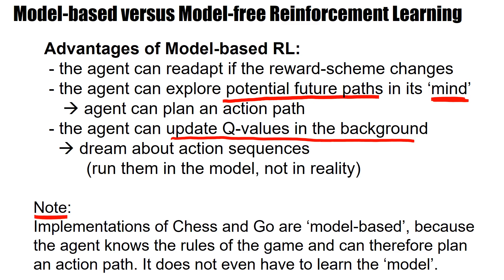As a side remark: some of the most famous applications of reinforcement learning have been for games such as chess and Go, and these are model-based implementations by nature because the agent knows the rules of the game from the beginning. It can therefore plan the action path one, two, or three steps ahead. It doesn't even have to learn the model — the model of the environment is the rules of the game, which tell you which future states are accessible from the current state.